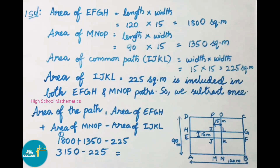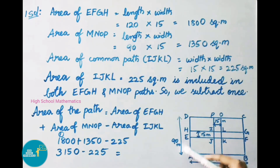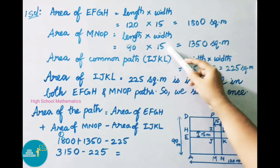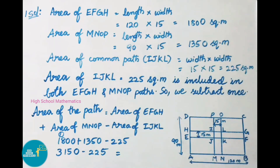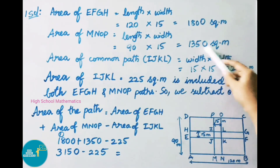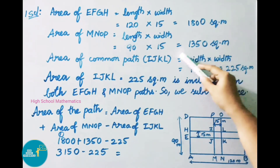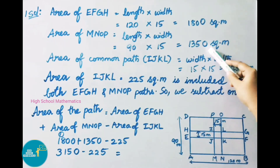Next, let us find the area of MNOP. Here length is 90 meters and width is 15 meters. So 90 into 15 equals 1350 square meters.